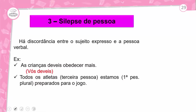Silépse de pessoa: discordância entre sujeito expresso e a pessoa verbal. Exemplo: 'As crianças deveis obedecer mais' — 'as crianças' pede a terceira pessoa do plural, mas foi usado o verbo na segunda pessoa do plural. Outro exemplo: 'Todos os atletas estamos preparados para o jogo' — 'todos os atletas' é terceira pessoa, mas 'estamos' é primeira pessoa do plural, totalmente discordando o sujeito com a pessoa verbal.